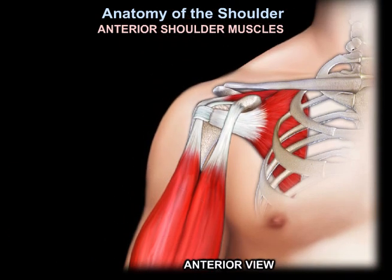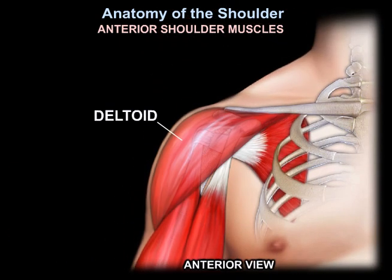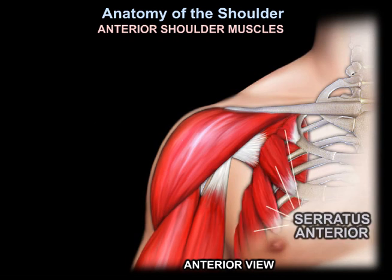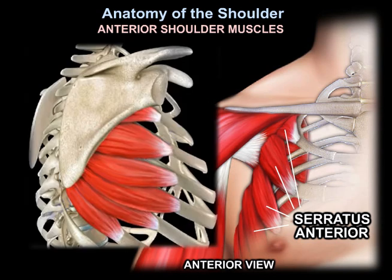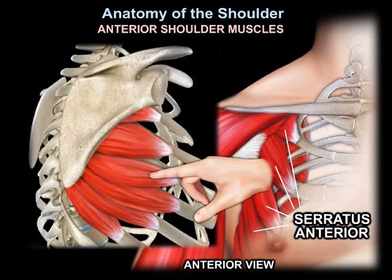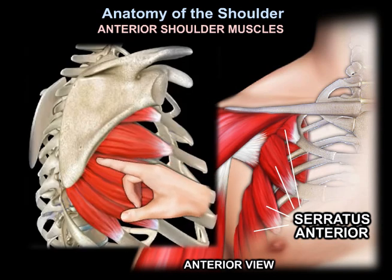In the anterior shoulder muscles, you can also see the deltoid muscles. You can see the serratus anterior — this is the direction of the serratus anterior.